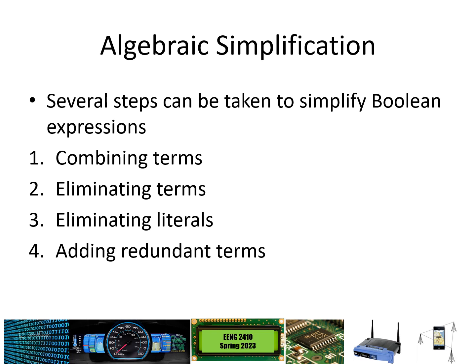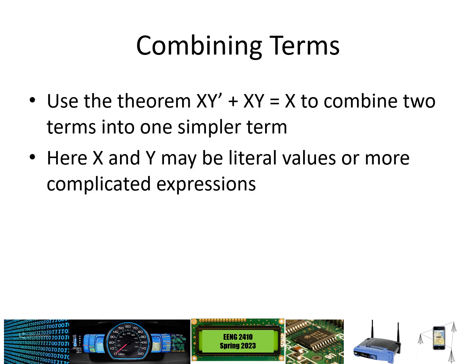To simplify using Boolean algebra, we can do a few different things: we can combine terms, eliminate terms such as ORing with zeros and ANDing with ones, eliminate redundant literals — for example if you had b AND b or a AND a, redundant literals can be eliminated — and we can add redundant terms. As we just saw, adding things that effectively multiply by 1 or add zero is perfectly allowed. When combining terms, use the theorem: xy' OR xy equals x, combining two terms into a simpler one. Also note that x, y, z could each be a single literal or a combination such as a AND b AND c.